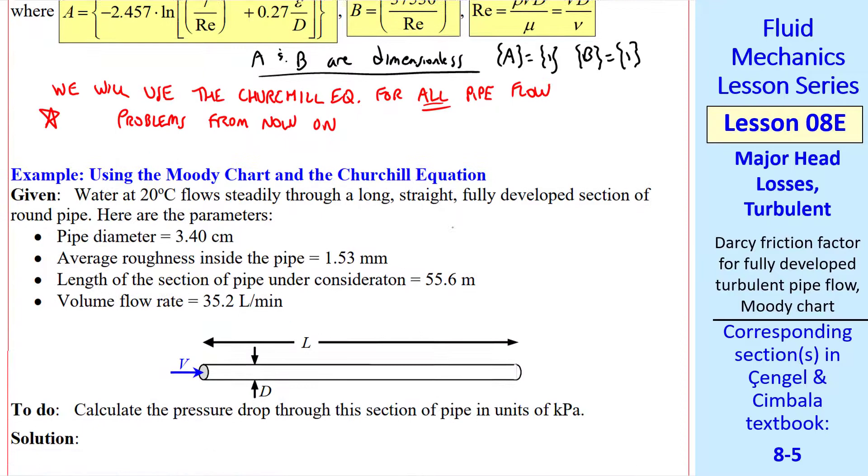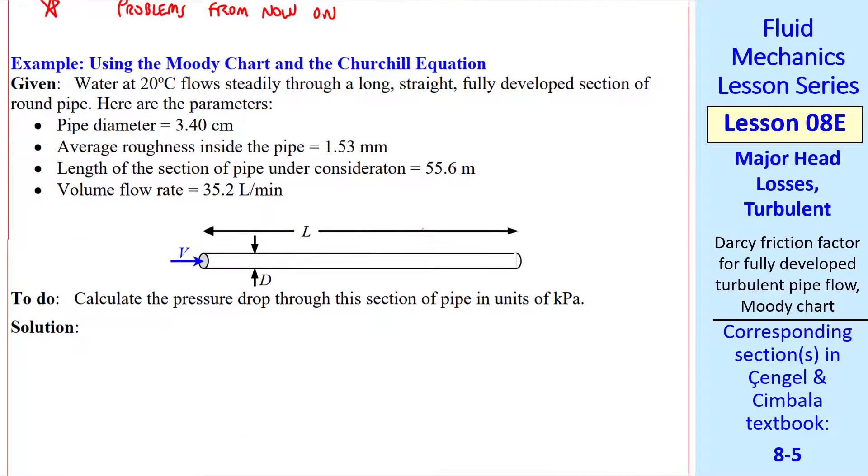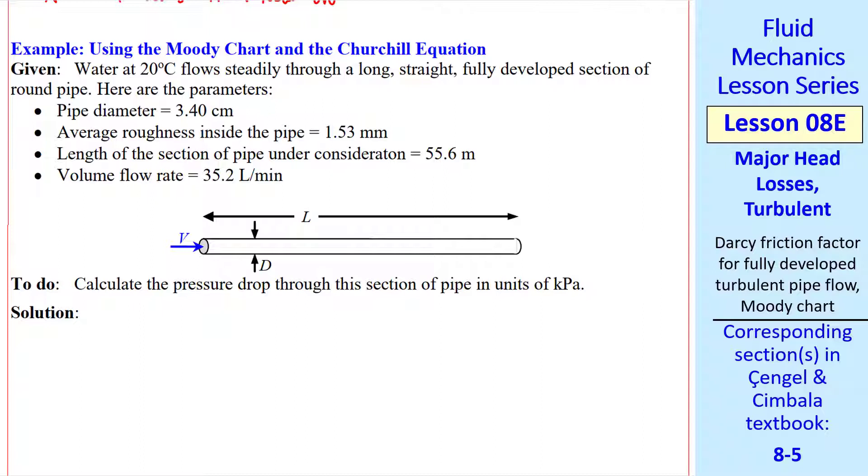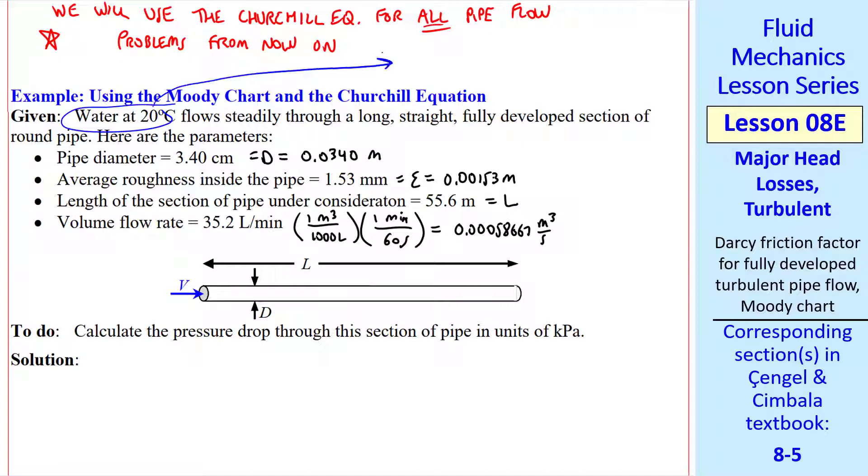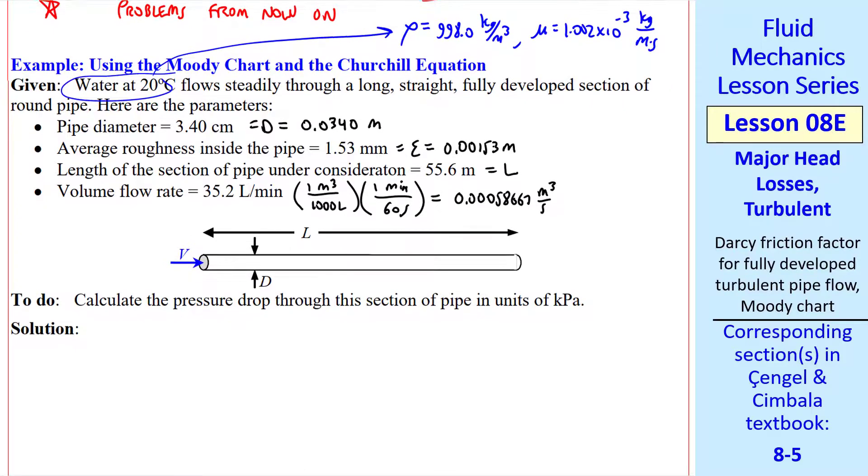I'll do two examples. First, a simple one just to show you how to use the Moody chart and the Churchill equation, and then I'll do a more complicated problem. Here we have water at 20 degrees flowing through a long straight, fully developed section of round pipe, as sketched. We give pipe diameter, which I convert to meters, average roughness inside the pipe, which is epsilon, which I also convert to meters, length of the section of pipe under consideration is L, and then we give V dot in liters per minute, which I also convert to standard SI units. We also look up the properties for water at 20 degrees C, density and viscosity.